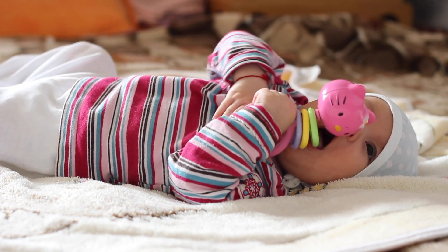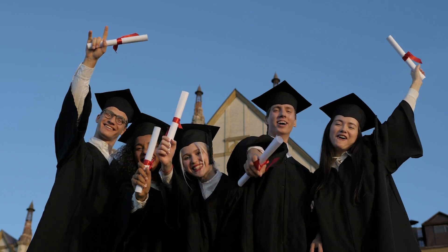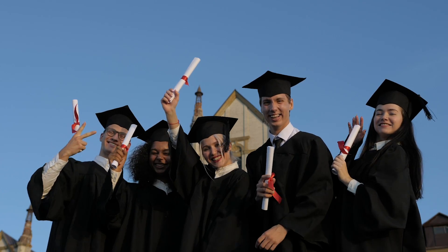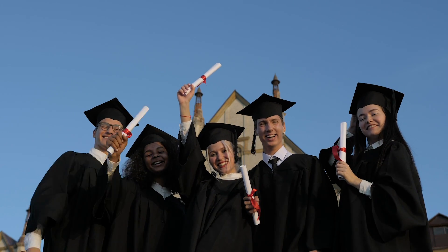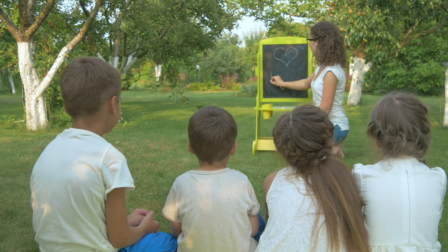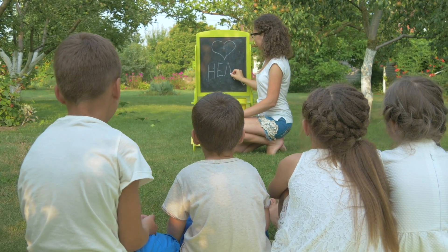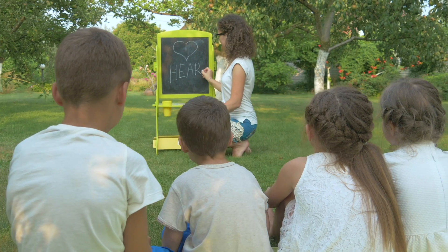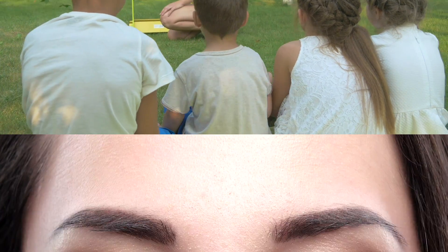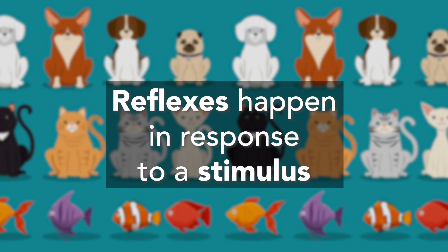A human is the most intelligent animal on earth. Humans have the least number of innate behaviors — most human behaviors are learned behaviors. In fact, the only innate behaviors in humans are reflex behaviors. A reflex behavior is a simple action that happens without you thinking about it, like blinking.